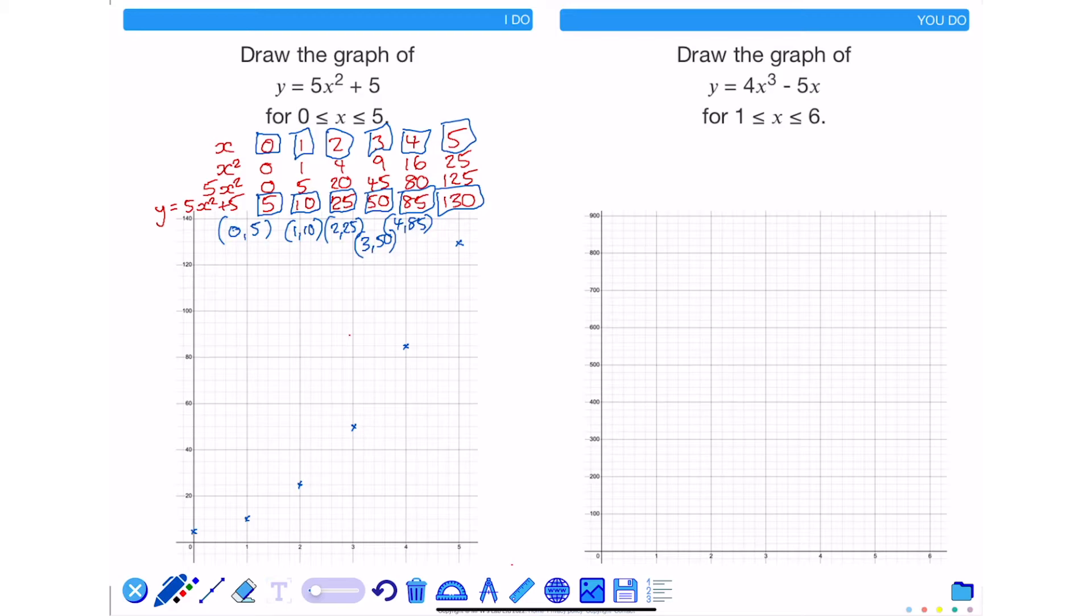Now because the greatest power in the graph that I am trying to draw was x squared, this will be a nice smooth curve. So I now join all of these points up with a smooth curve.